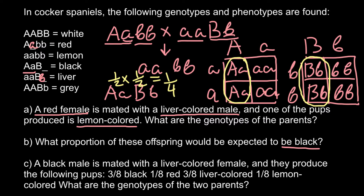So the probability for gene A heterozygous is one half, and for gene B having at least one dominant allele is one half. We multiply these two probabilities and the answer is one quarter — 25%. We cannot fill in a specific second allele here because it can be capital B or small b and this would still produce the black phenotype. Now question C.